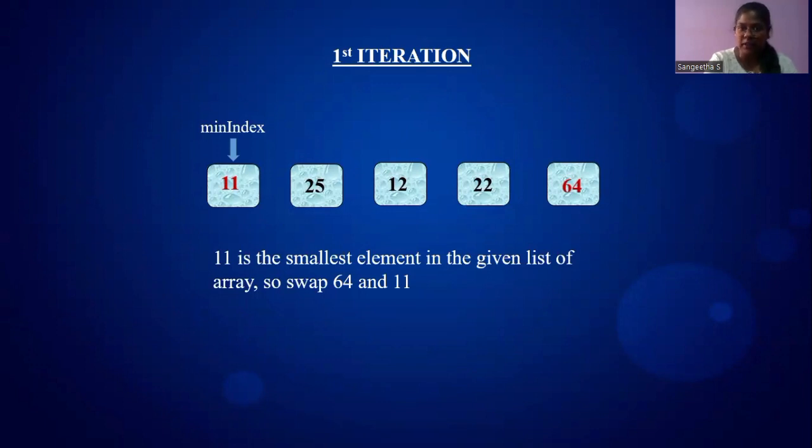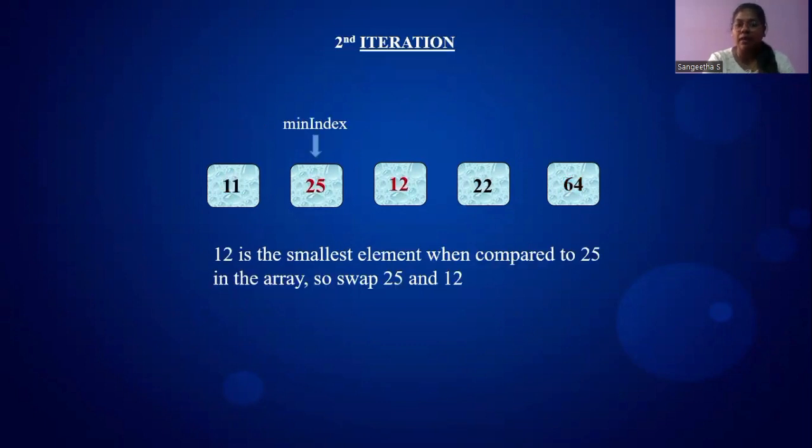If swapping has been done, then we increment the value of i and j. Now the i value is at 1 and j value is at 2. We initialize minIndex as 1. In the place of 1 there is value 25. If we compare 25 with the rest of the elements on the right side of the array, which are 12, 22, and 64, 25 is greater than 12, so we swap 25 and 12.